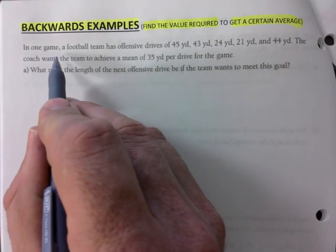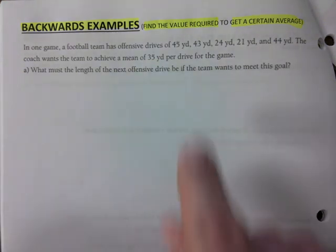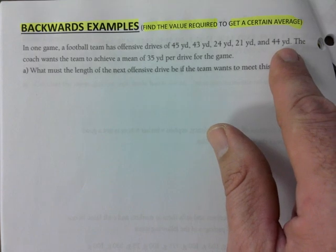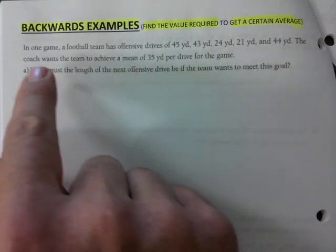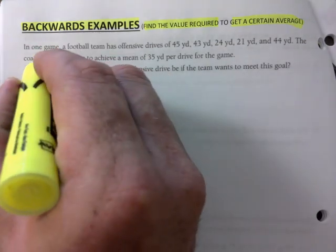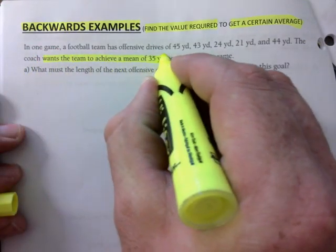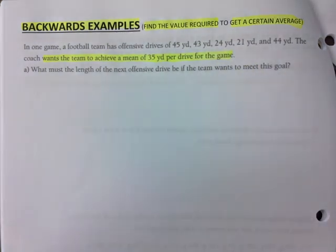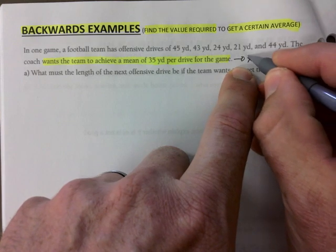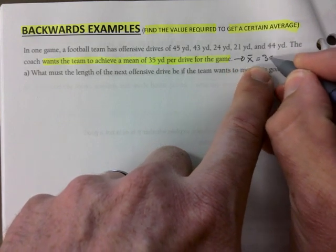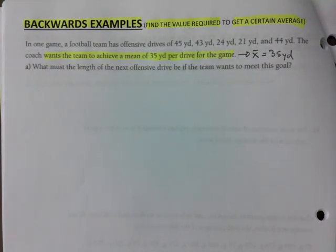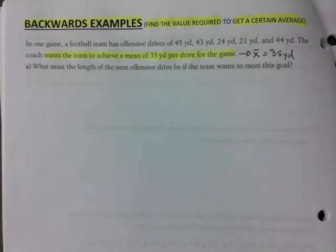So here we go. A football team has offensive drives of 45 yards, 43 yards, 24, 21, and 44. The coach wants the team to achieve a mean - here it is - 35 yards per drive. That is a long sentence but it's really telling you that the average is 35 yards. That's what you want. The average is already given, you're not going to find it, you're not going to calculate it because you already know.